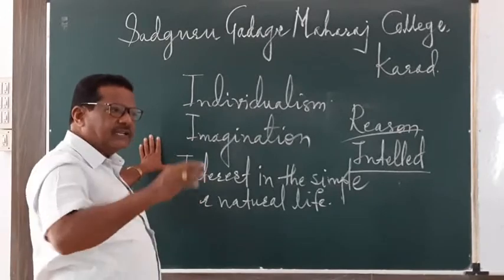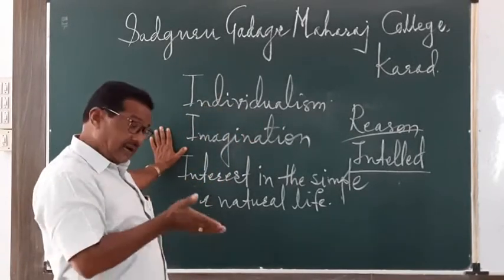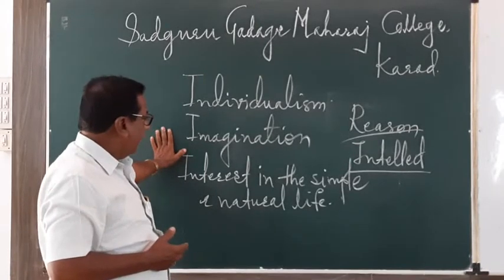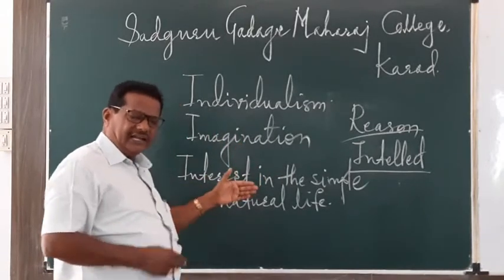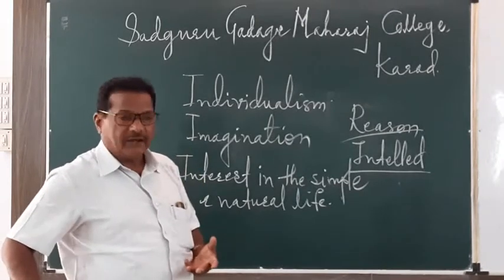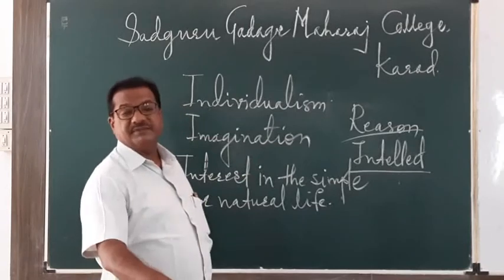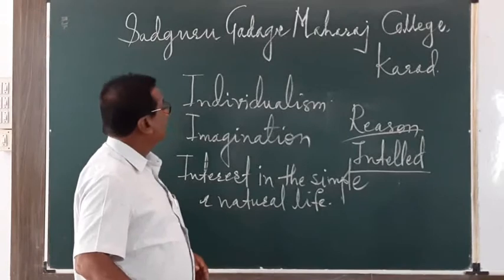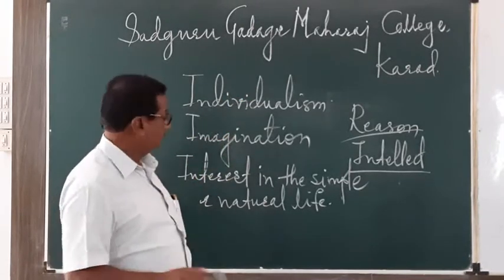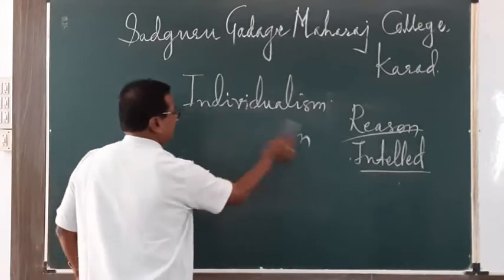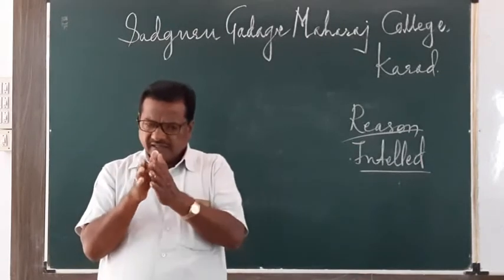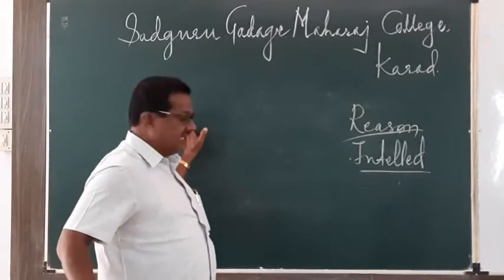Romantic poetry is a complete revolt — a complete reaction against the earlier tradition of 18th century poetry of Alexander Pope, John Dryden, and Dr. Samuel Johnson. By marking a complete break from this earlier tradition, Wordsworth, Coleridge, Scott, Shelley, Byron, and Keats popularized romantic poetry, which remained popular for the first half of the 19th century. There is a complete contrast between romantic poetry and neoclassical poetry.